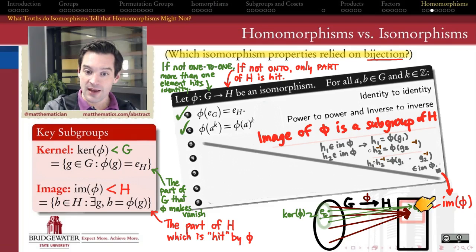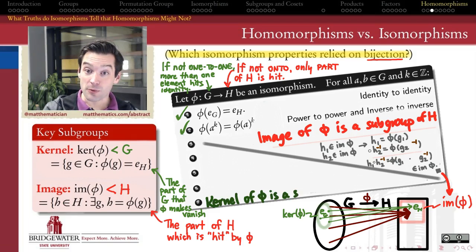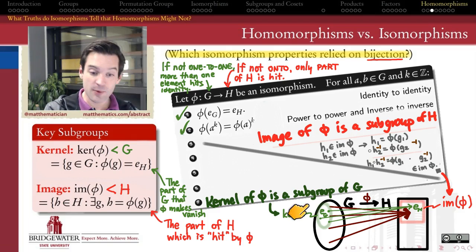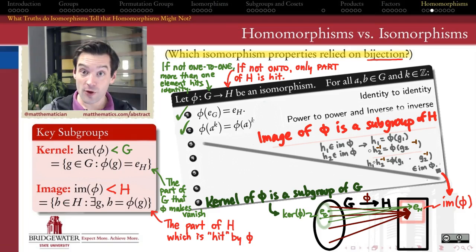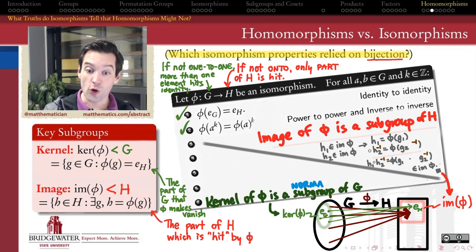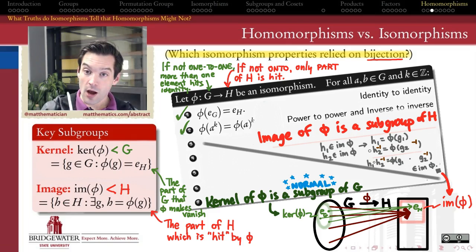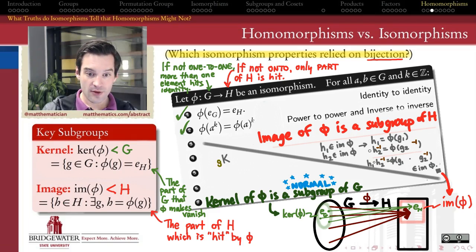What about the kernel of phi and its relationship to the domain group? Not only is the kernel of phi a subgroup of the domain — not just a subset — but more importantly, perhaps most importantly for this whole chapter, the kernel of any homomorphism out of G is a normal subgroup of G. Normal subgroups are the building blocks of G; they illuminate how G is built out of that piece. So let's prove that the kernel of phi is a normal subgroup of G.